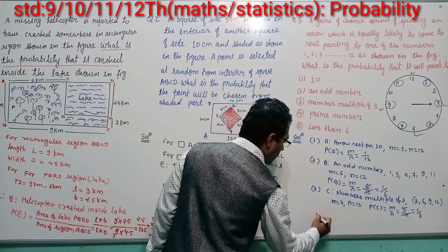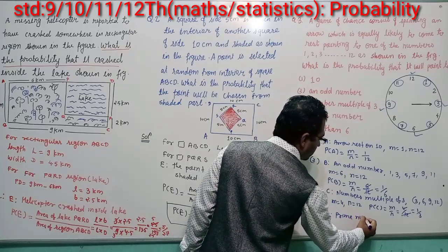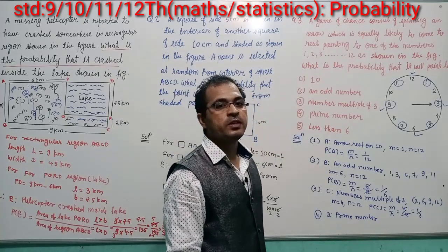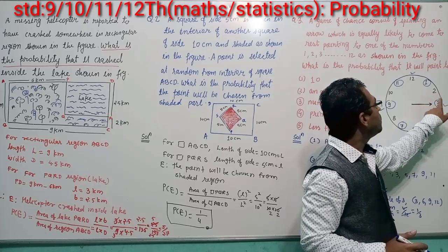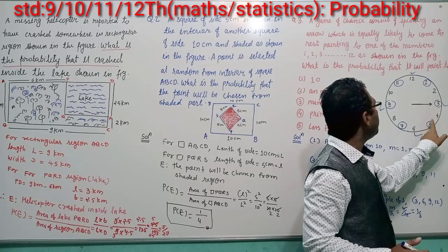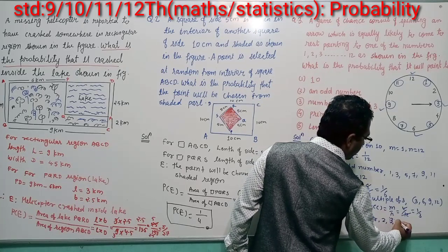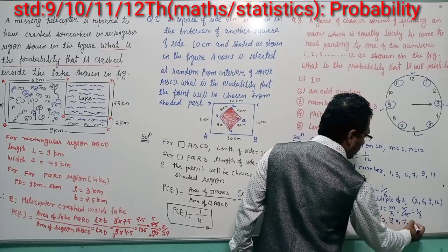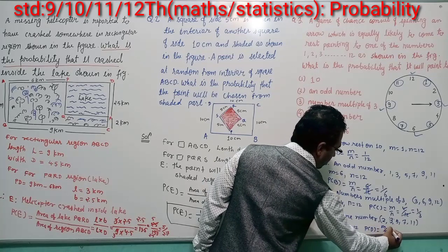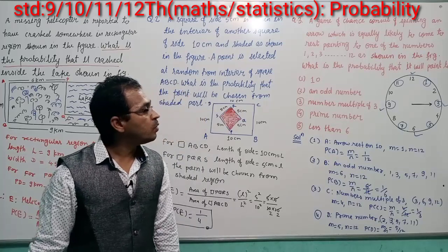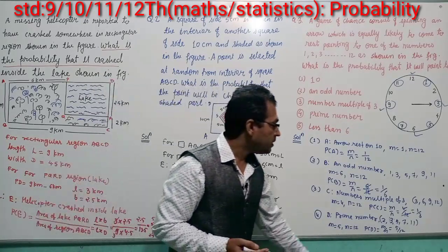Sub-question D: let event D be that the arrow rests on a prime number. Prime numbers are those not divisible by any number other than 1 and themselves. The prime numbers from 1 to 12 are: 2, 3, 5, 7, and 11. So favorable events m = 5 and total outcomes n = 12. P(D) = 5/12. The probability that the arrow comes to rest on a prime number is 5/12.